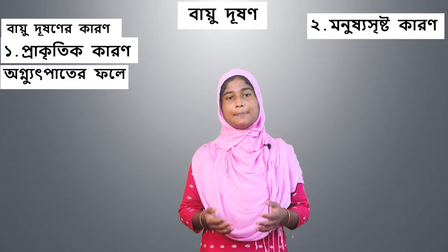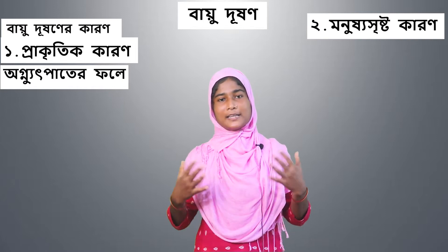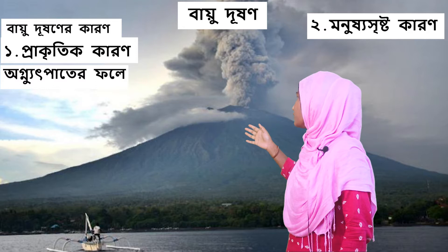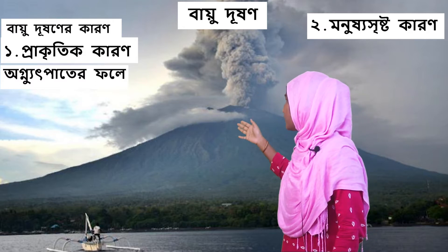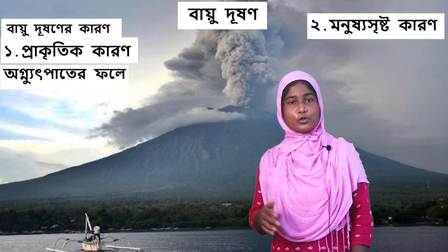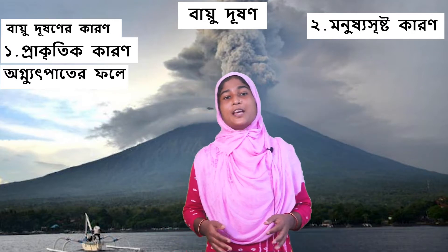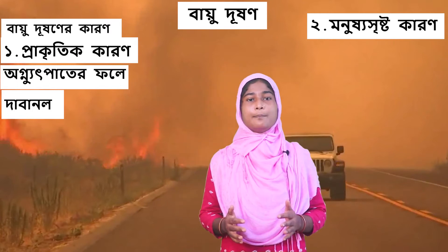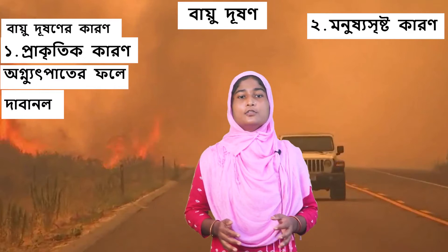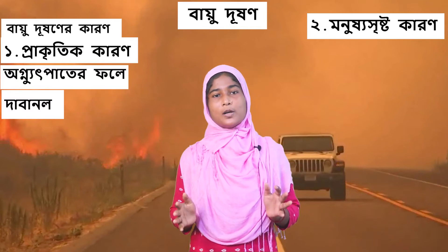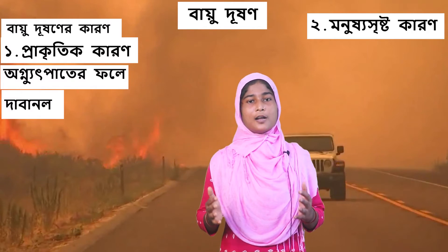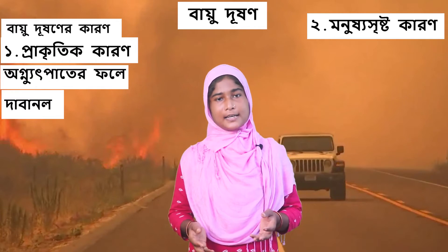આગણાએ ગ્રીર અગ ફળ ફ઼ બ़ ્ — the air around us becomes polluted. When gases and dust spread in the air in large quantities, the atmosphere above becomes affected and polluted gases rise upward.